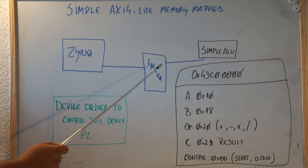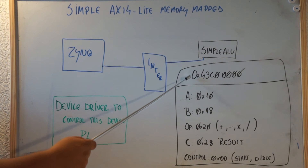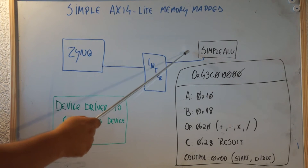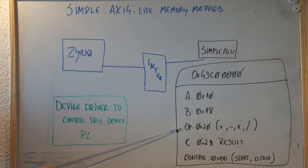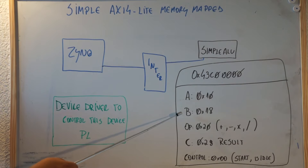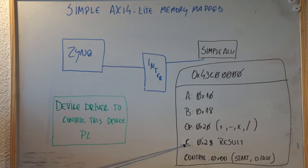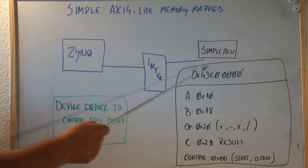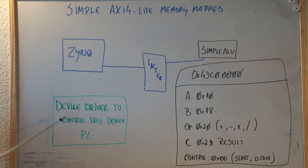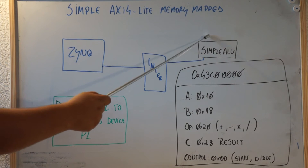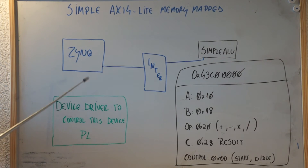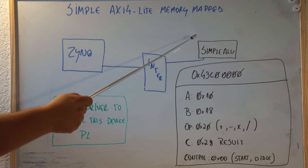So the simple ALU will be mapped at a specific address, and this IP core is going to have three parameters: one that is parameter A, second B, the third is the operation that you can choose between sum, subtraction, multiplication, or division, and we're going to have a result. There is also a control parameter, where you're going to use to start and check if the calculation is done or not. The idea is that before we start to learn how to create device drivers, we're going to create a simple device, and then learn how to create a device driver in Linux to control it.